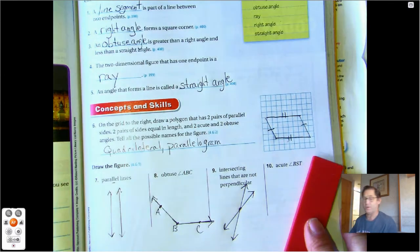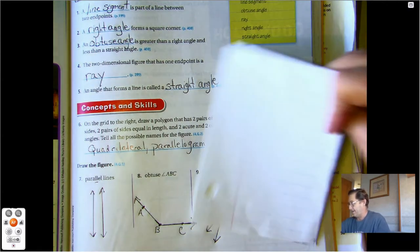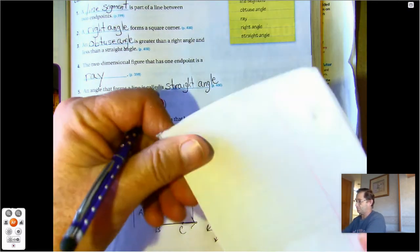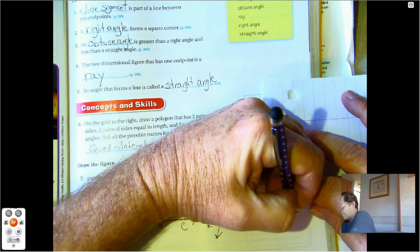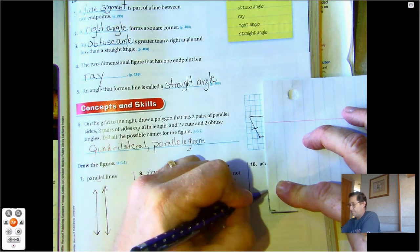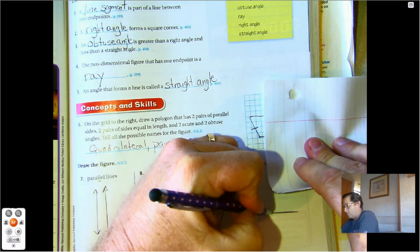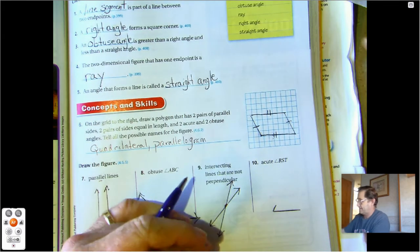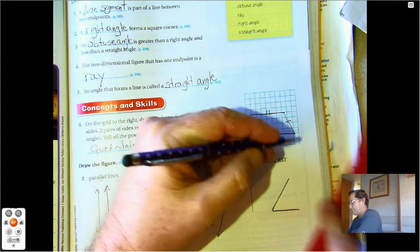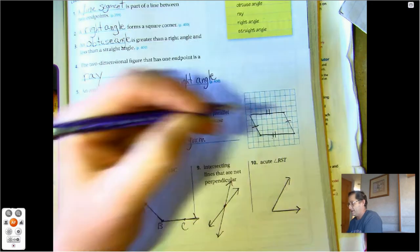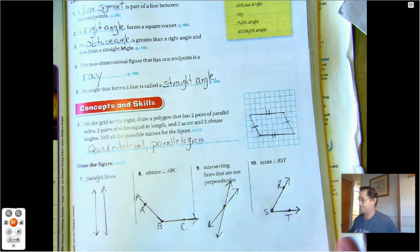And then an acute angle RST. So again, if we use the corner of the piece of paper, this would be a right angle. So an acute angle is less than a right angle, so we're going to go in. And angle RST.